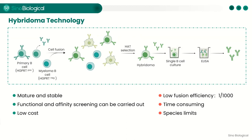The advantages of hybridoma technology are that it is a well-established methodology with a very high success rate. Functionality and affinity screening can be carried out along the experiment, and the cost is relatively low since no special equipment is required. However, disadvantages include low cell fusion efficiency—merely one in a thousand even for electrofusion—limited suitable myeloma cell lines, which restricts antibody species, and a long life cycle of generally two to three months from cell fusion to obtaining positive clones.